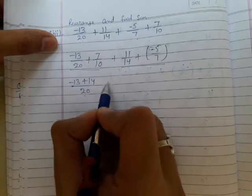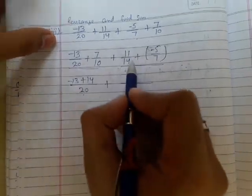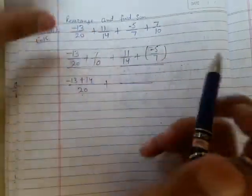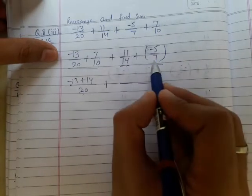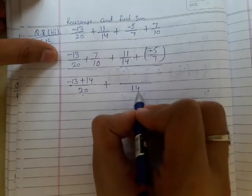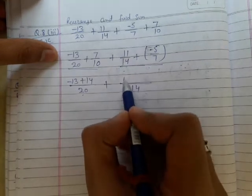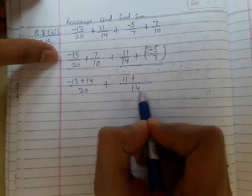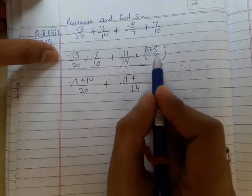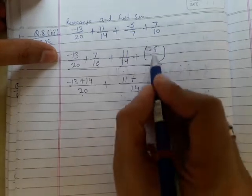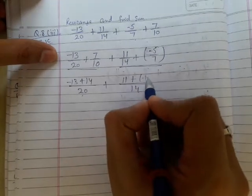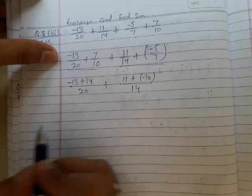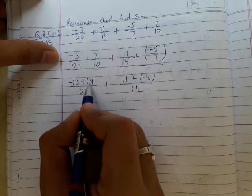Now for the second pair, the LCM of 14 and 7 is 14. 14 divided by 14 equals 1, times 11 equals 11. 14 divided by 7 equals 2, times -5 equals -10, which is negative.